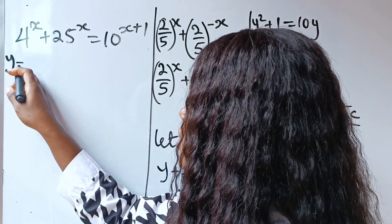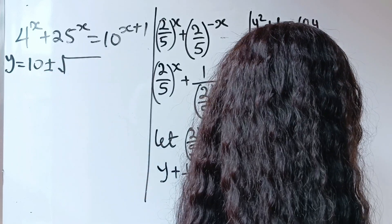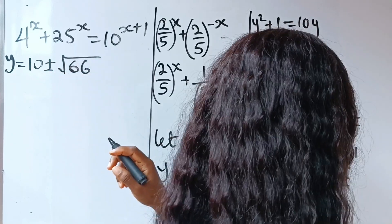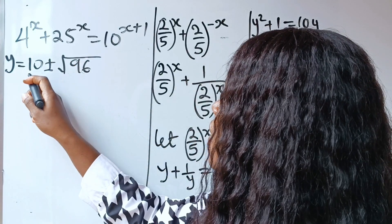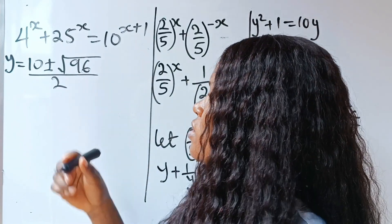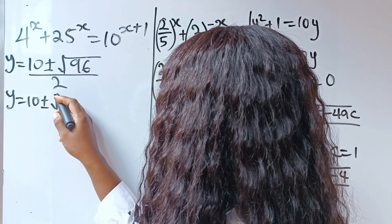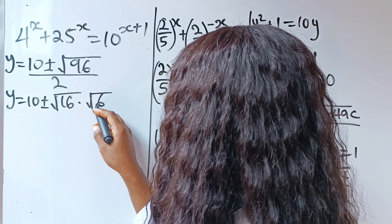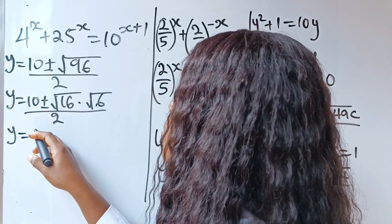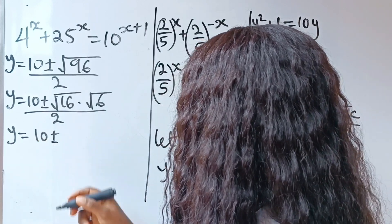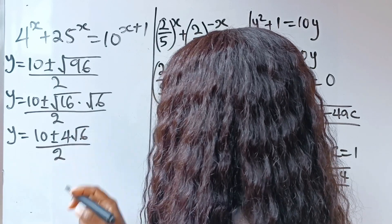We will have that our y is equal to 10 plus or minus square root of 100 minus 4, which gives us 96, divided by 2. Now 96 is the same thing as square root of 16 multiplied by square root of 6, divided by 2. Square root of 16 is 4, so we have 4 root 6 divided by 2.